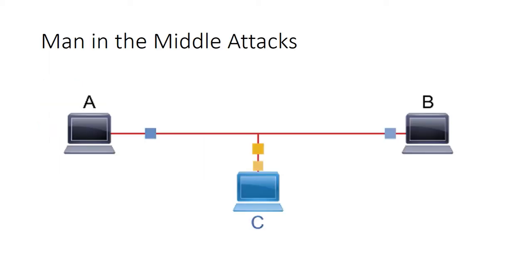Man-in-the-middle attacks take place when a hacker intercepts packets by eavesdropping on the internet. This attack allows an attacker to assume the identity of a legitimate endpoint in order to take control of a session and possibly gain privileged access to a network resource.